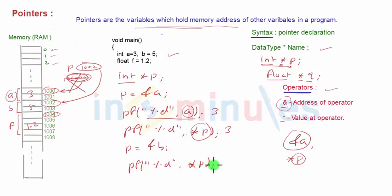This time if I say printf percentage d star p, this will print me the value at p. But what is p now? p is 1002, so it will print me the value of b, that is 5. So that is how we use the & operator and the star operator.